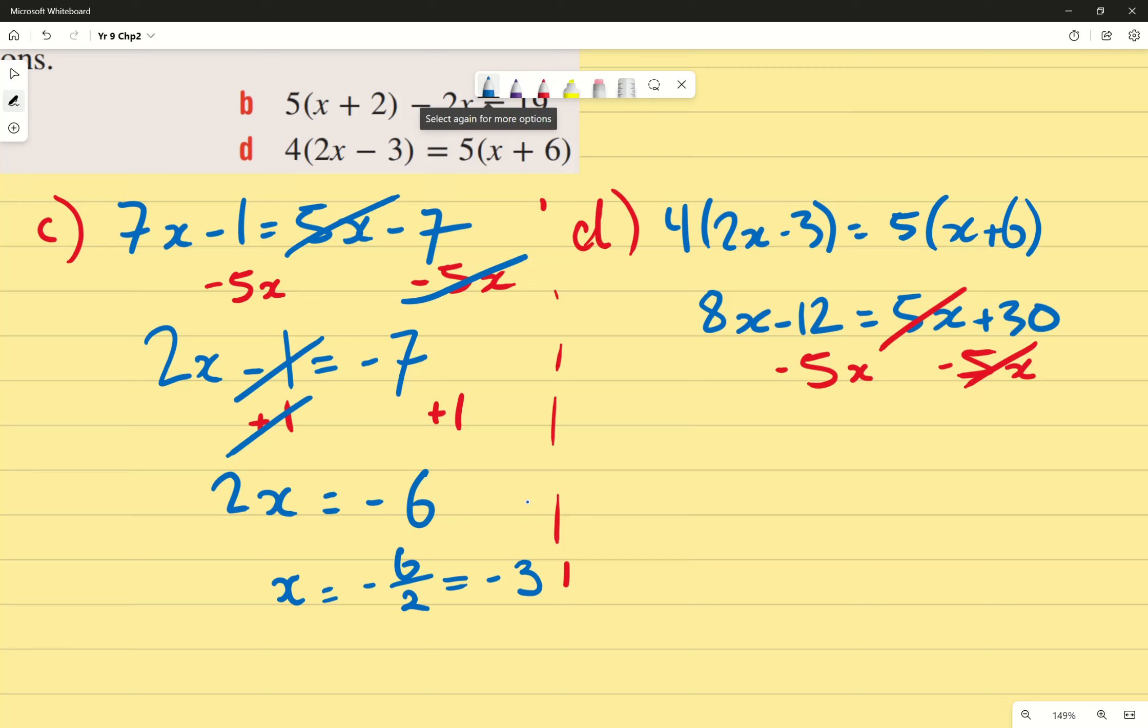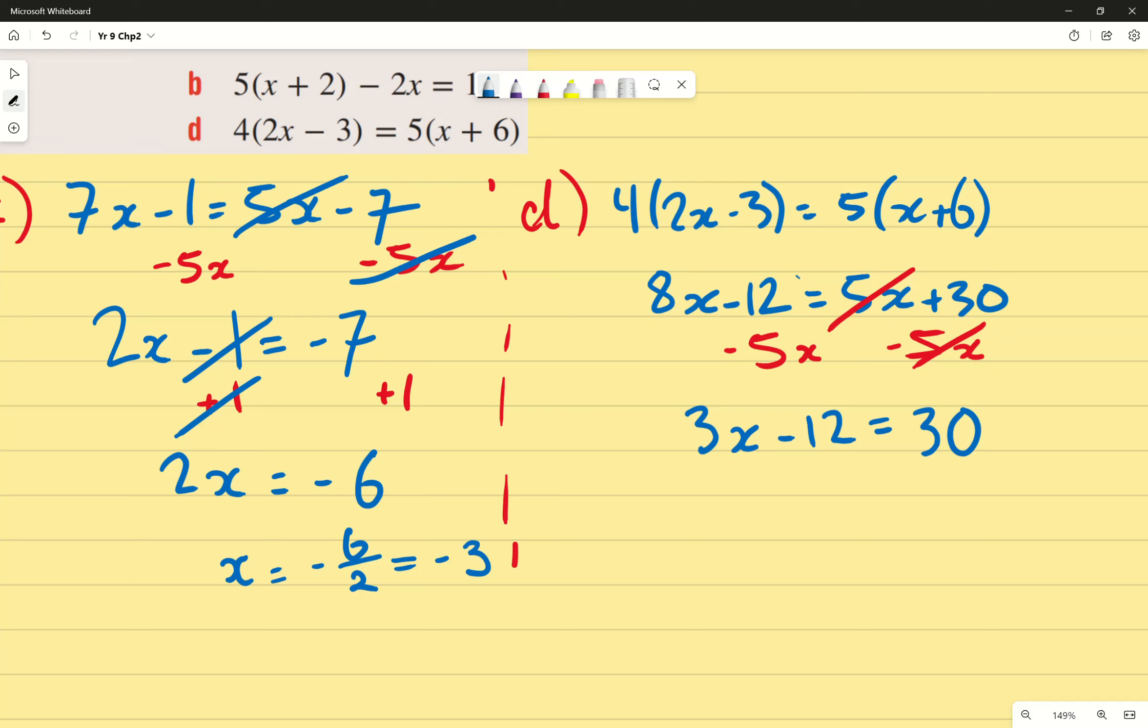which is 3x. Thank you very much. 3x. Remember, I haven't done anything to the negative 12, so I'm going to leave that there. The 5x's are cancelled out. And we're left with positive 30. I'm going to then consider the negative 12 right there and do the opposite.